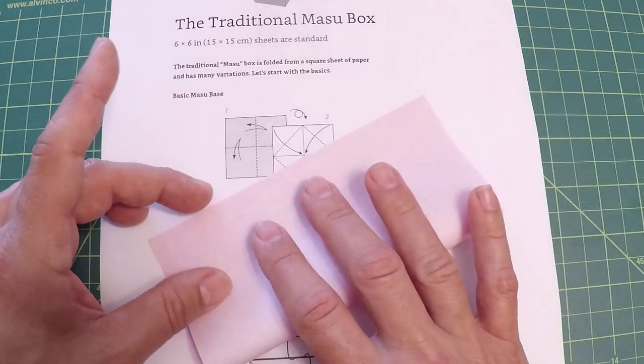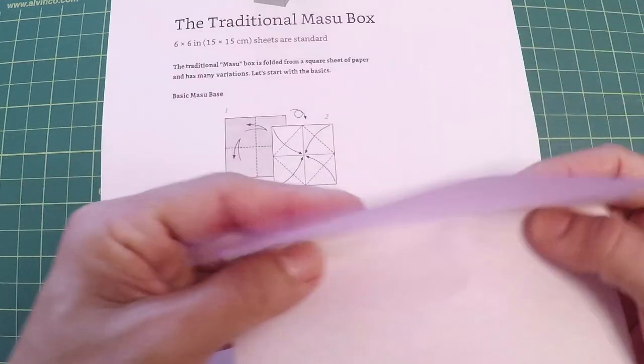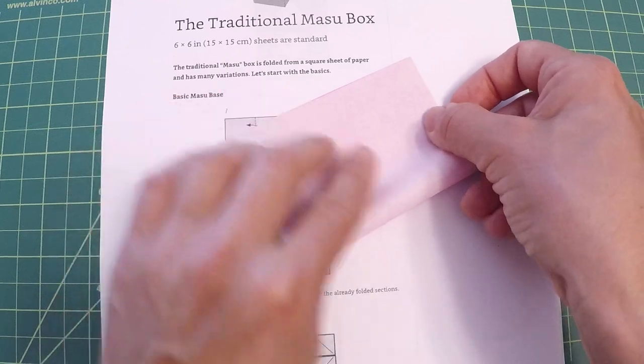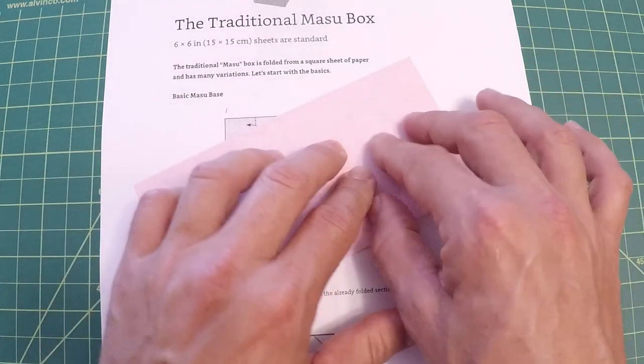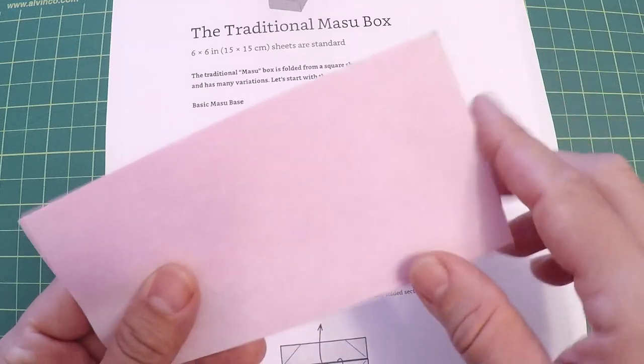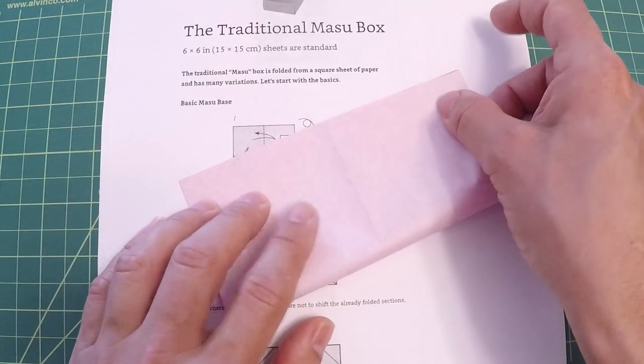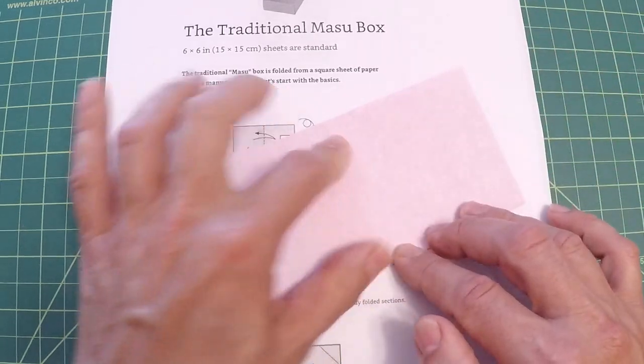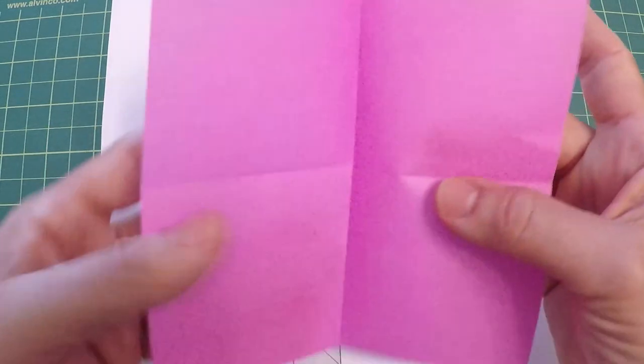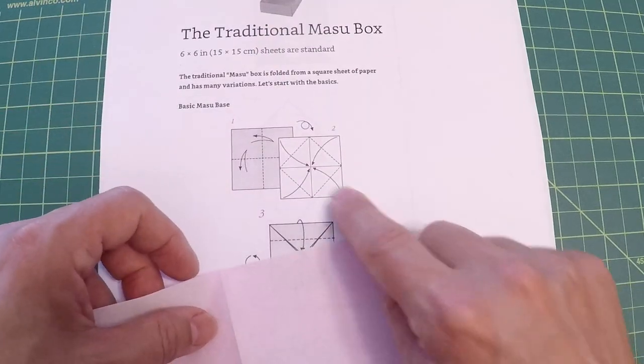So first we're going to do on the colored side folding over this way. Try that one more time, make it really nice and exact. You really want to make it really perfect every step, even if it means you have to unfold and fold again. Now your next step is to take this - this symbol means to turn it around - and now we're going to fold the corners in.